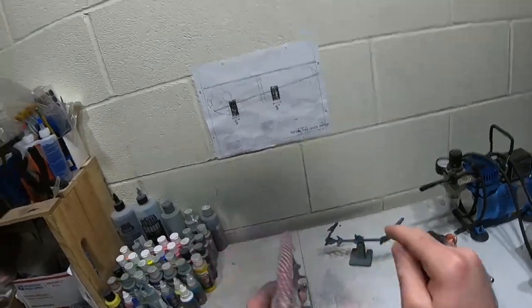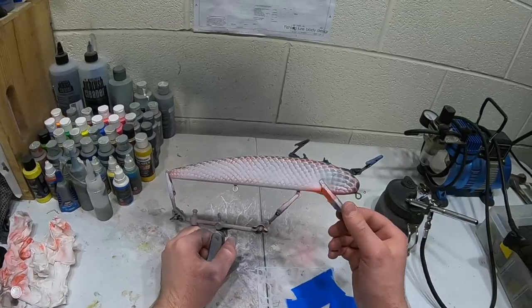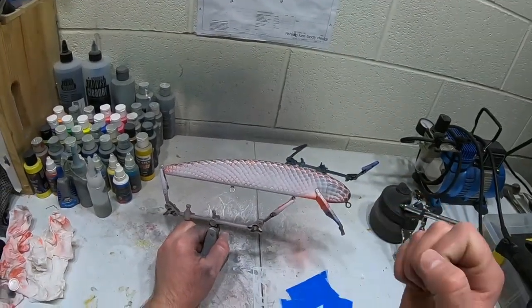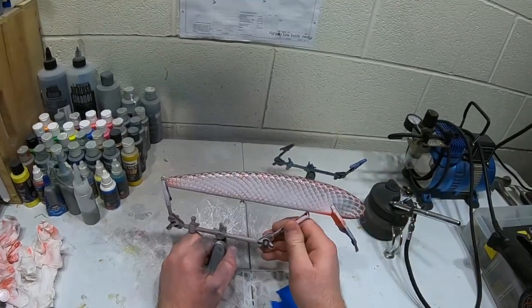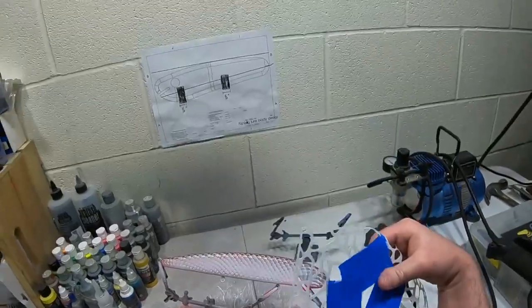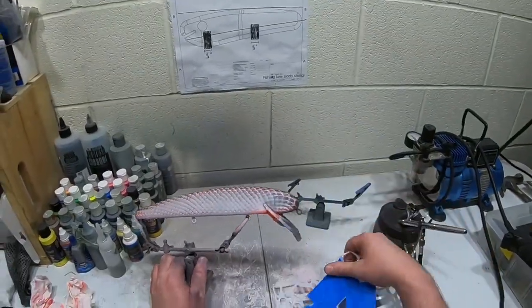So before I actually do the back, I'm going to do the gills. I'm going to put some red underneath the gills to make them look a little more realistic and pop. So let's do that right now. I have this stencil for it. We're just going to put it on there and we're going to spray the gills, and then clean our brush and we'll come over with a darker color.